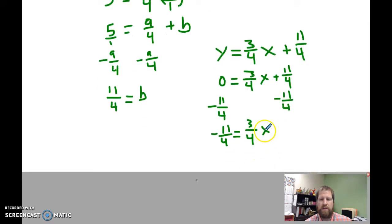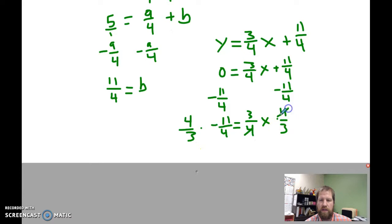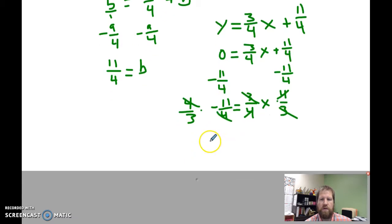To get x by itself to isolate x, I'm going to multiply by the reciprocal, 4 thirds times 4 thirds. And that looks like that actually turned out pretty nice. These will cancel, and these will cancel. So that will get me, even though the numbers might be kind of weird, negative 11 over 3 is equal to x, and y is 0. So my x-intercept is negative 11 thirds, and my y-intercept is 11 fourths.